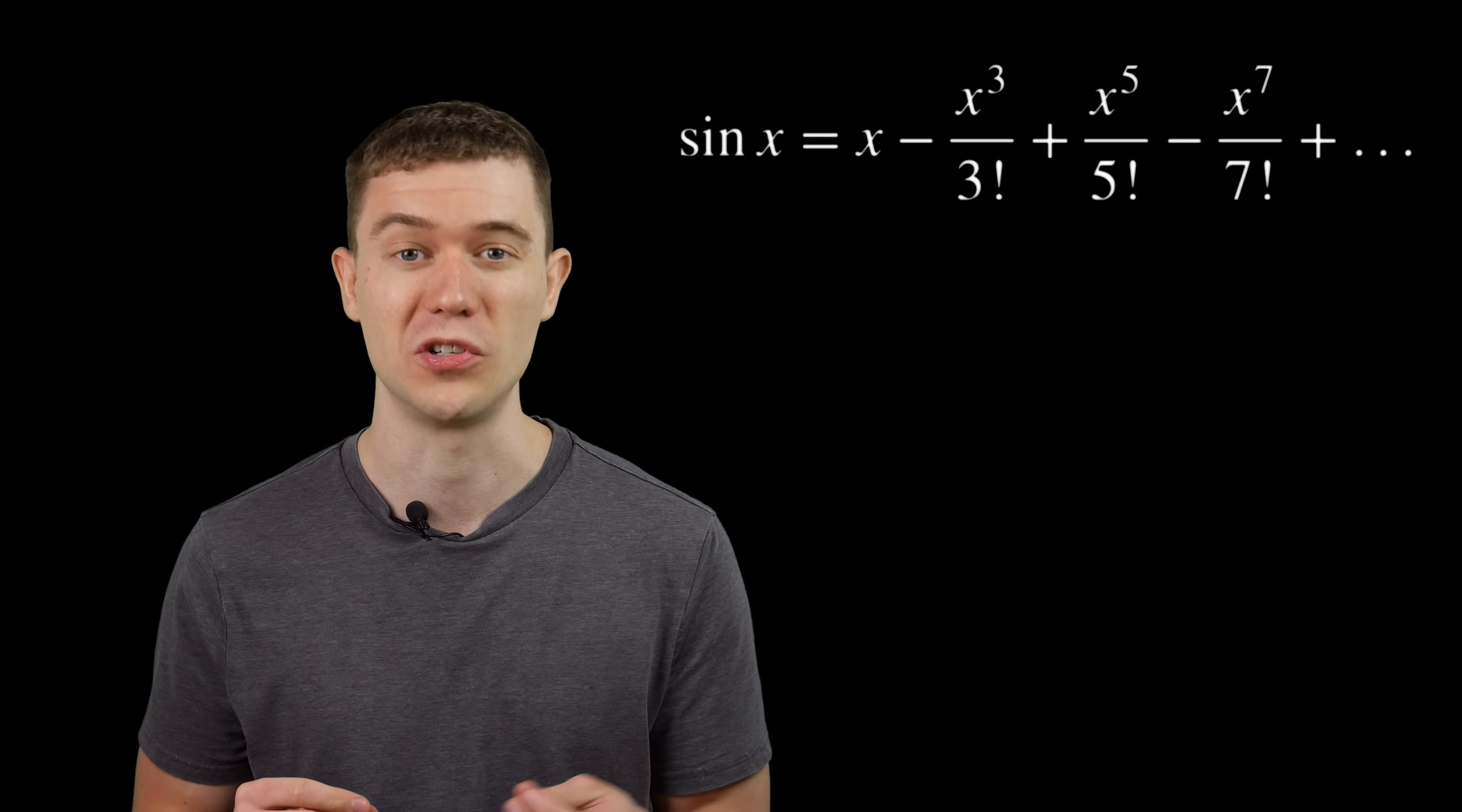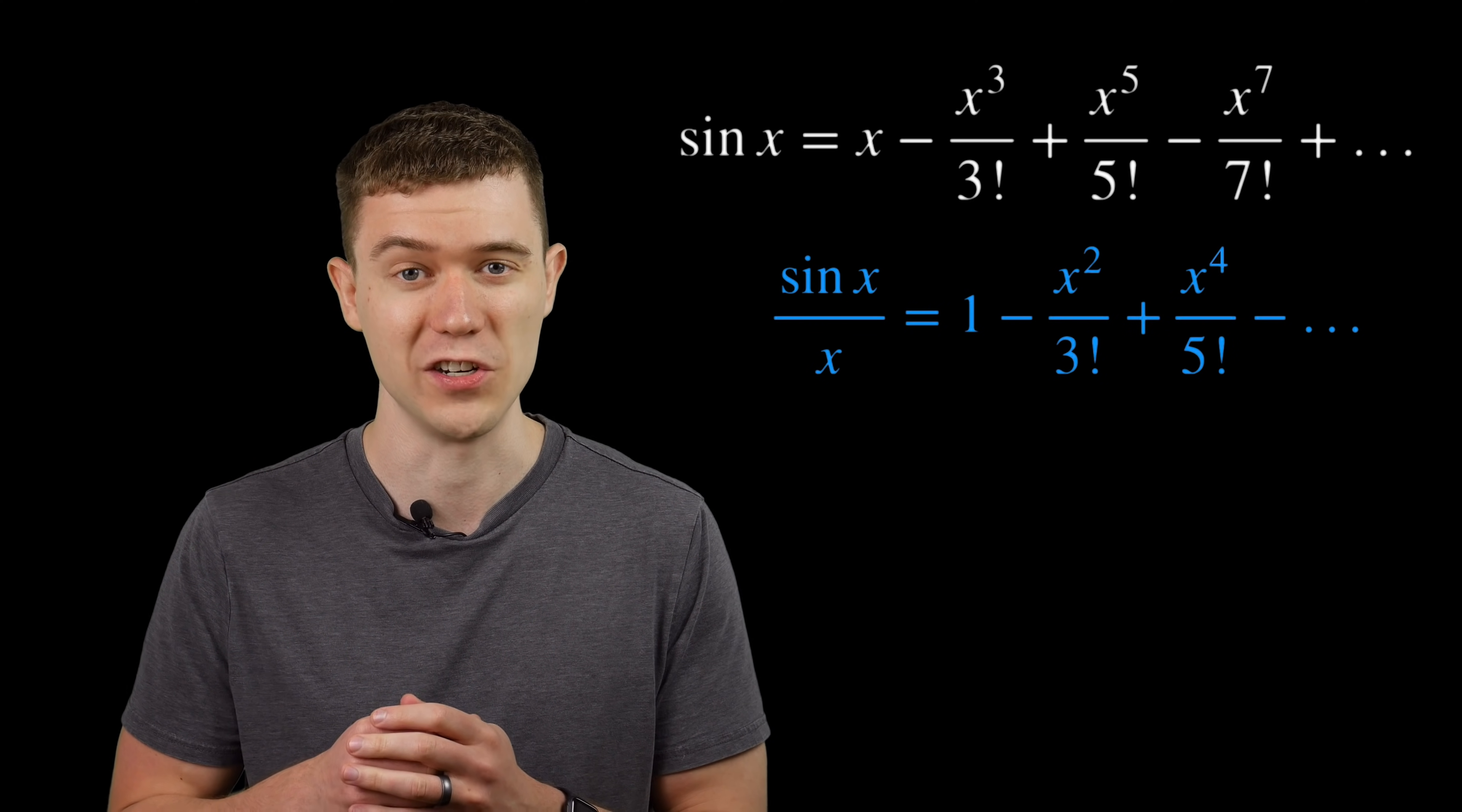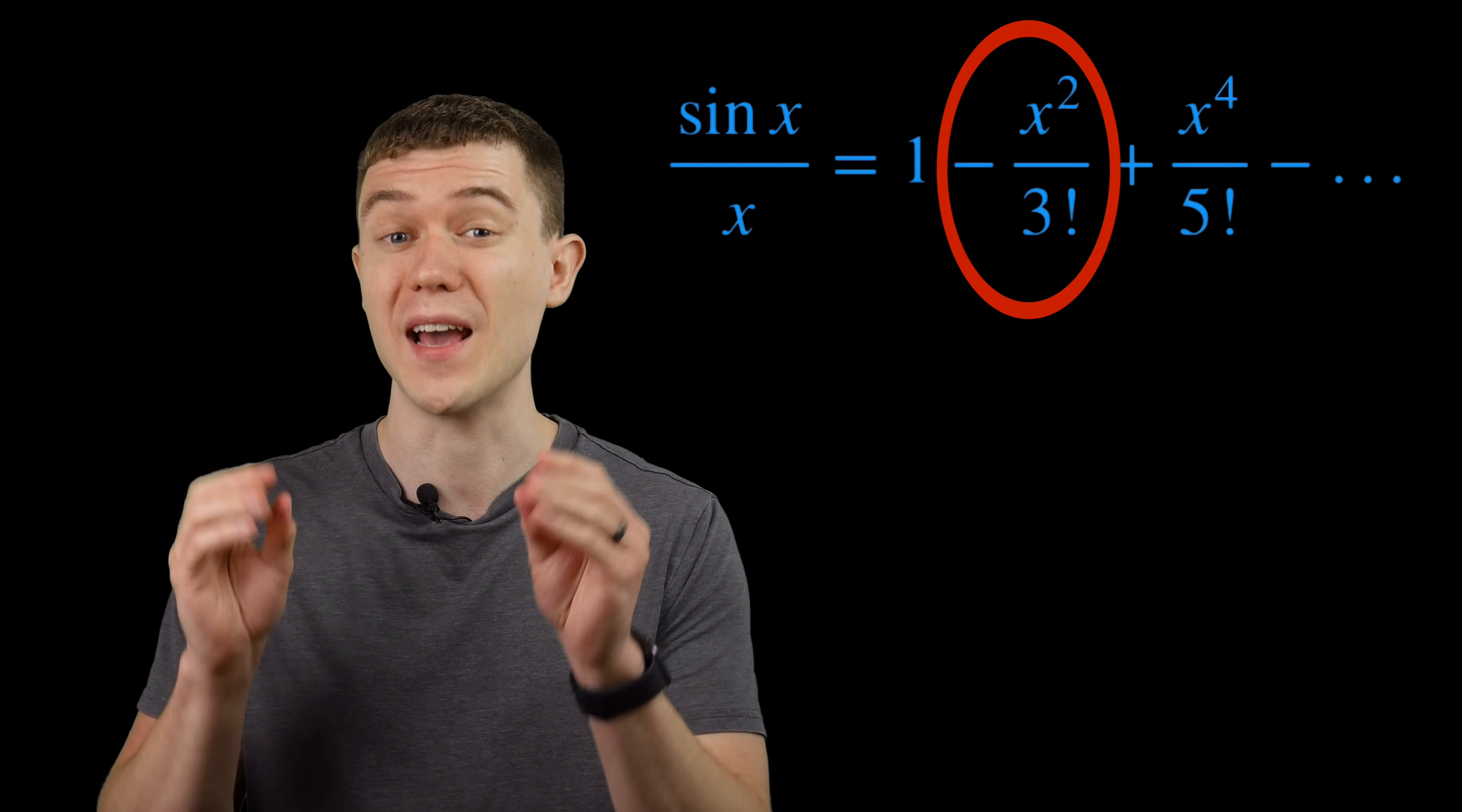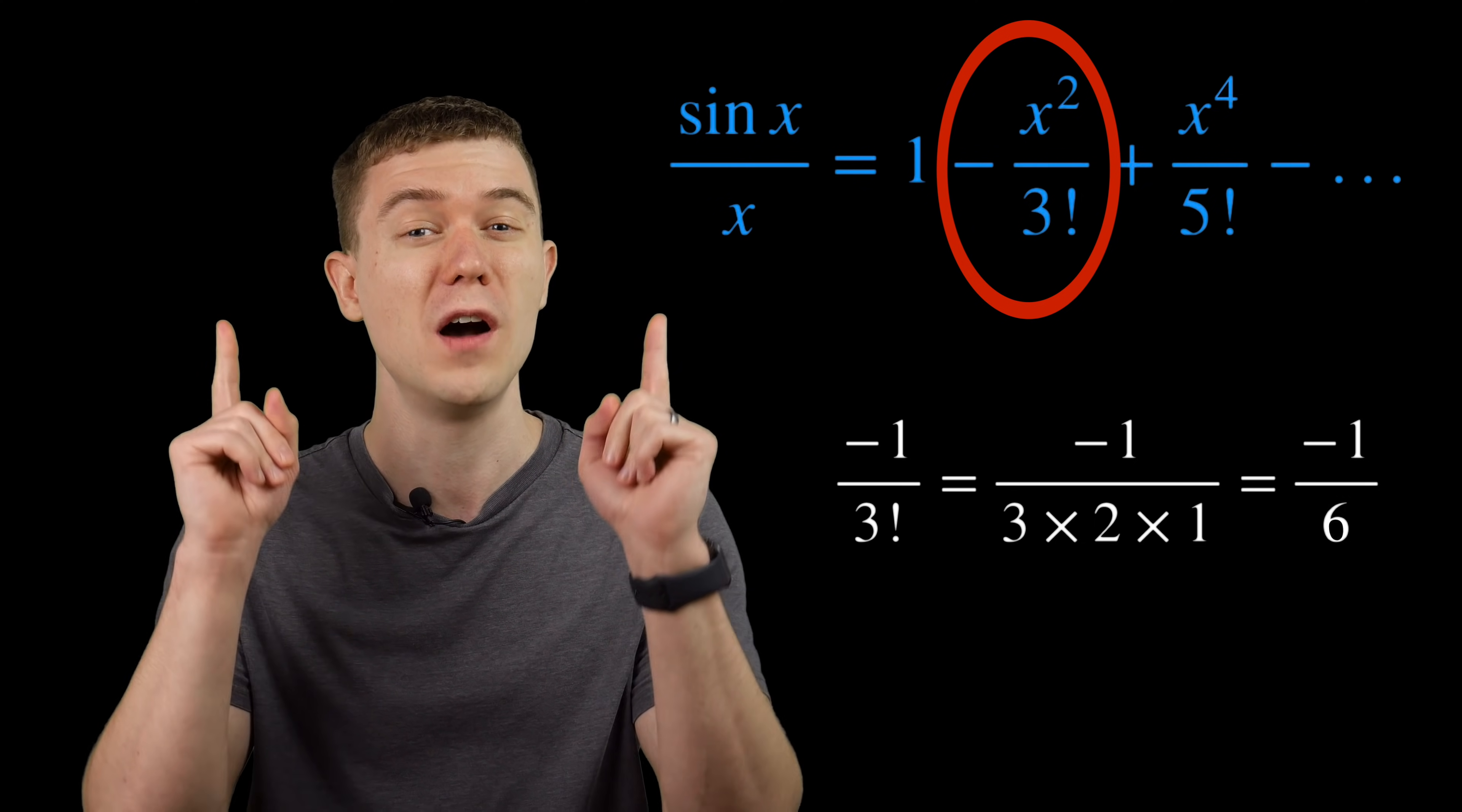This is something you probably see in Calc 2. Divide both sides by x, so we have sine x over x as this new representation. And I want you to pay very close attention to the coefficient of the x squared term, that minus 1 over 3 factorial. That's minus 1 over 6. That will come up later.